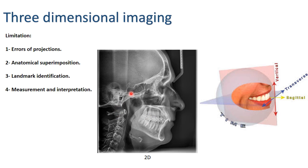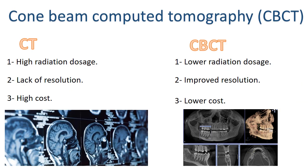For this reason, three-dimensional radiography is important. The first type is cone beam computed tomography, abbreviated as CBCT. Conventional CT has high radiation dosage, lack of resolution, and high cost. CBCT is used for the head and jaws because it has lower radiation dosage, improved resolution, and is less expensive than a conventional CT scan.